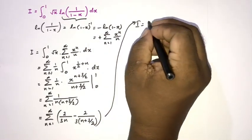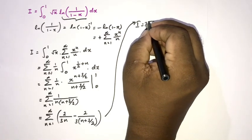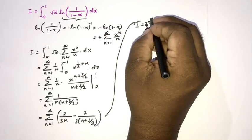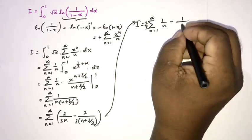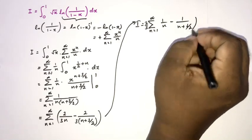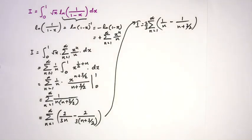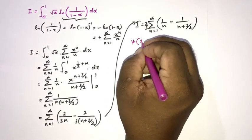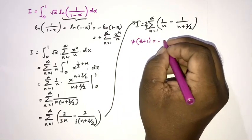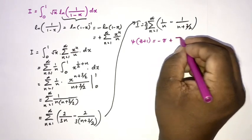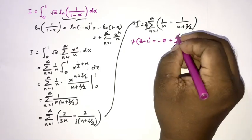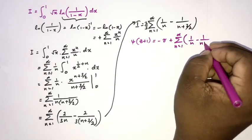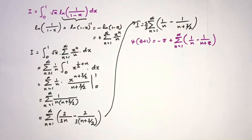We can take two thirds outside the sigma notation, so I equals two thirds times the sum from n equals 1 to infinity of (1 over n minus 1 over (n plus three halves)). For the next step, I use the digamma function formula: the digamma of (c plus 1) equals minus gamma (Euler-Mascheroni constant) plus the sum from n equals 1 to infinity of (1 over n minus 1 over (n plus c)).